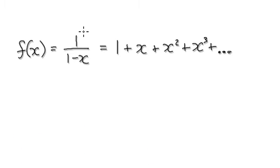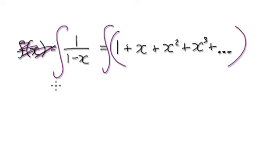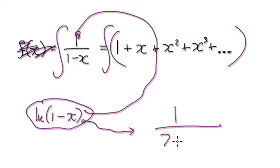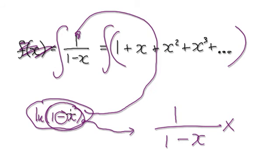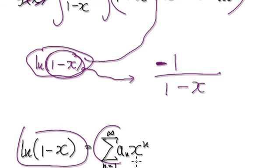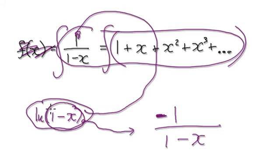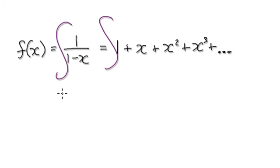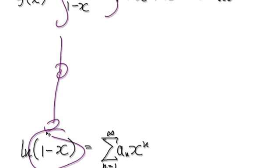If you look at this, this thing is exactly the same as this thing, which means we can integrate both sides. When you integrate the left side, you're looking for something such that when you differentiate it, it gives you this. Your initial guess should be the logarithm. When you differentiate ln(1 minus x), it gives you 1 over (1 minus x) times the derivative of the inside, which is minus 1 — that gets multiplied to the top. So integrating both sides will lead us to the power series representation, which I will do in the next video.